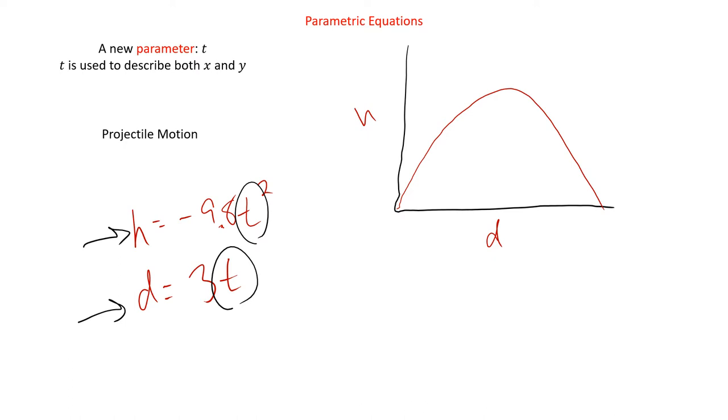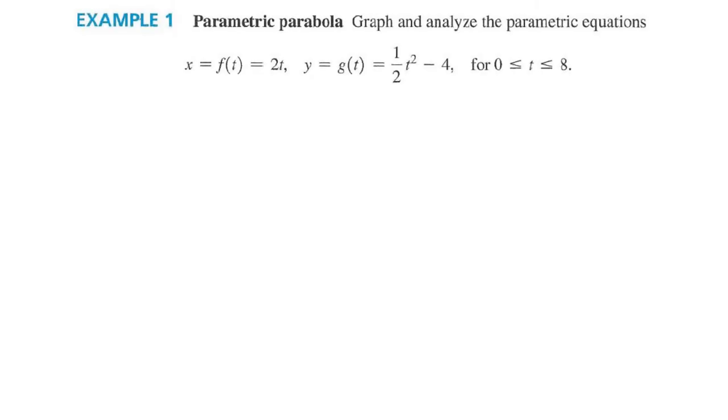So that's a crash course on what parametric equations are. Let's see some of them in action. So first, let's look at a parabola. Graph and analyze the parametric equation. And so we have x equals f of t, it's 2t, and y is g of t, it's 1/2 t squared minus 4. These are just giving the x and y function names involving t. Usually it's just x equals 2t and y equals 1/2 t squared minus 4. And then we have a window, a range for t.